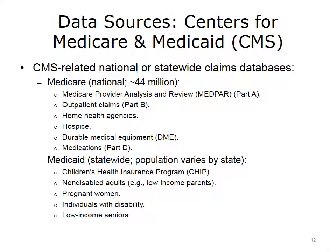Medicaid insurance claims are statewide, and the number of members varies by state. Medicaid data include the following categories: Children's Health Care Insurance Program (CHIP), non-disabled adults such as low-income parents, pregnant women, individuals with disability, and low-income seniors. Medicaid data is often controlled by the states, and each state may have different mechanisms to share the data with researchers.